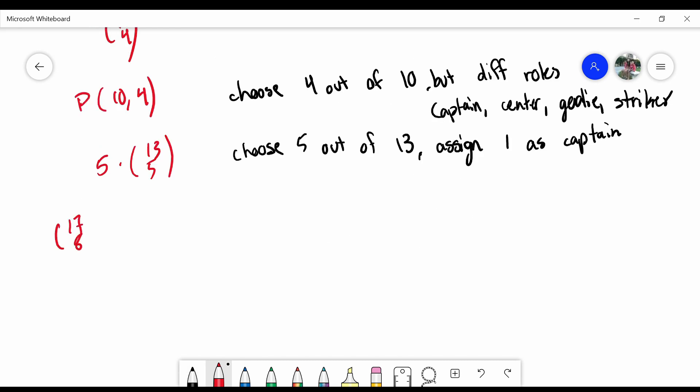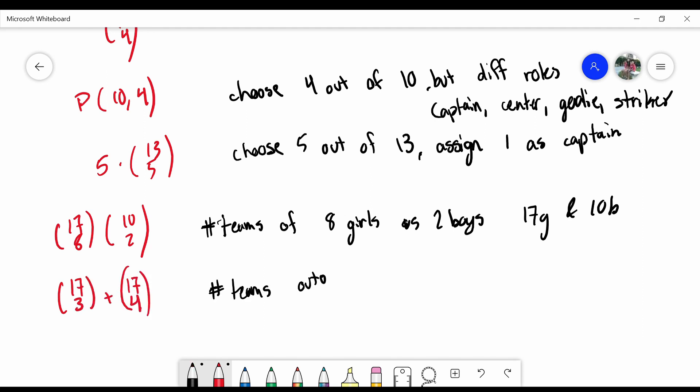How about this example? 17 choose 8 times 10 choose 2. Well, this could be interpreted as picking a team of 8 girls with 2 boys, and there are a total of 17 girls and 10 boys to choose from. What if I had 17 choose 3 plus 17 choose 4? It could be the number of teams out of 17, which are 3 or 4 people.